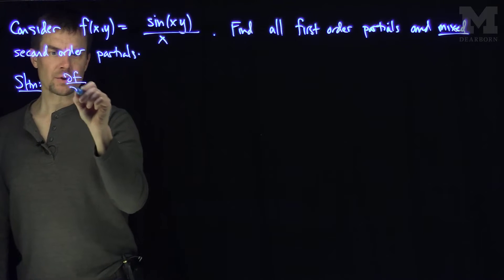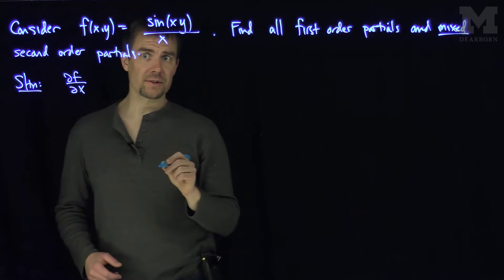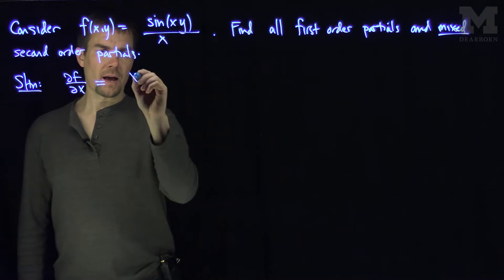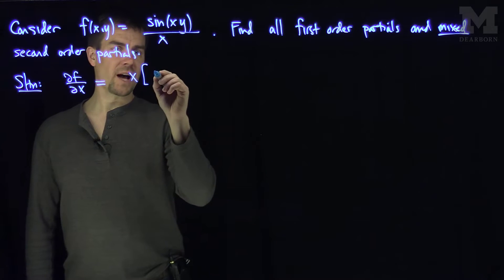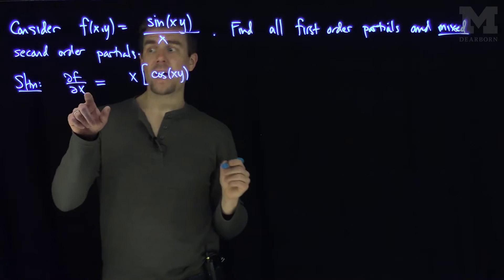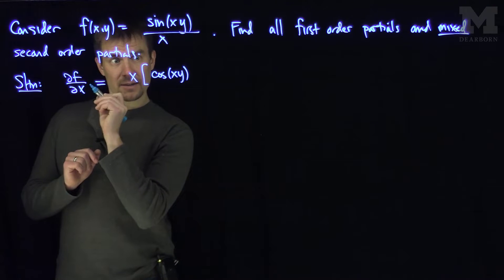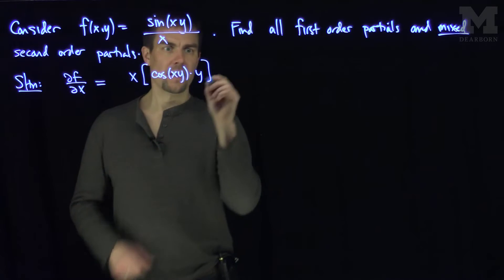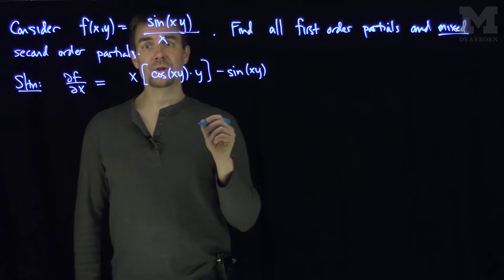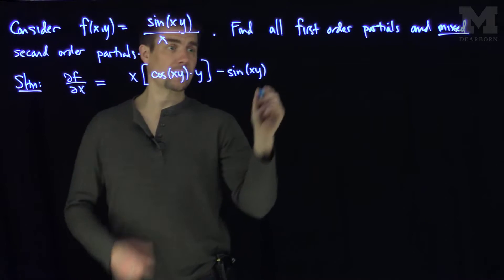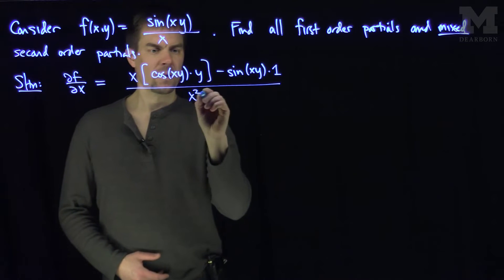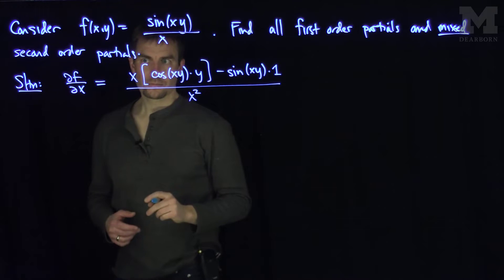So ∂f/∂x will require us to hold y as a constant and use the quotient rule. I'm going to do the bottom, x, times the derivative of the top. The derivative of sine is cosine of xy, and the derivative of xy with respect to x is going to be y. Then I do minus the top, sine of xy, times the derivative of the bottom. The derivative of x with respect to x is just 1. All divided by the bottom squared.